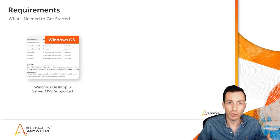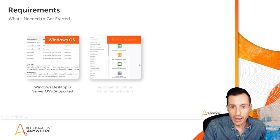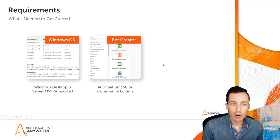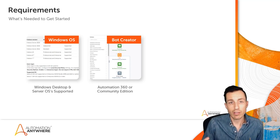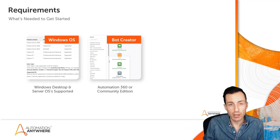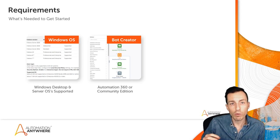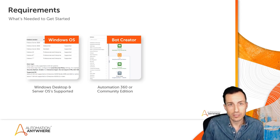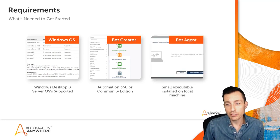That allows you to run a virtual Windows machine from within your Apple operating system. The next component we have to have is our bot creator license. A bot creator license can come in two ways: your organization may have Automation 360 and given you a bot creator license, which will enable you to create and test bots. If you don't have access to Automation 360, you can do the exact same thing on community edition — you'll want to go and register for community edition.